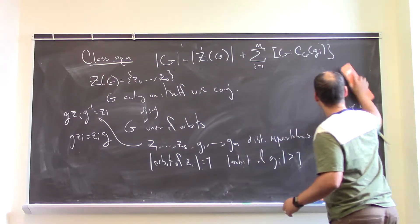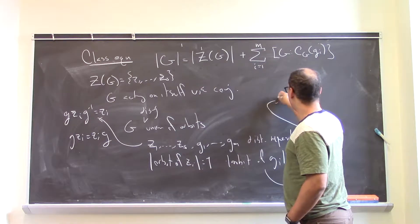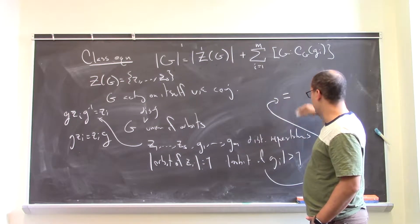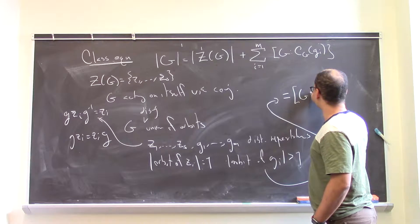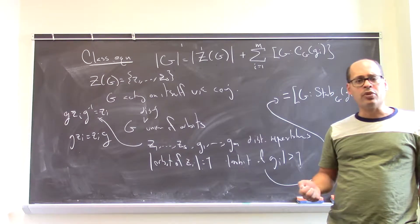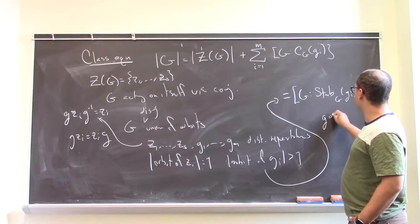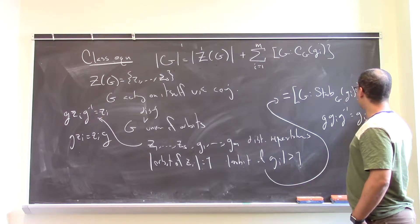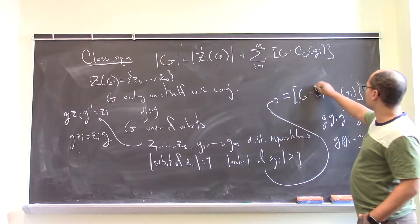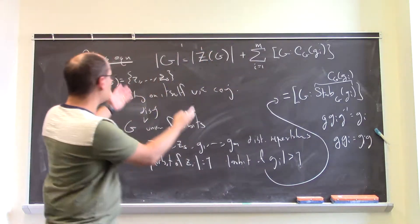How big are these other orbits? The size of the orbit of one of these other elements can be calculated with the orbit-stabilizer theorem. It's the order of the group divided by the order of the stabilizer — in other words, the index in the group of the stabilizer of Gᵢ with respect to the conjugation action. What does it mean that a group element stabilizes Gᵢ? It means gGᵢg⁻¹ = Gᵢ, which is to say that g and Gᵢ commute. So the stabilizer is actually the centralizer.